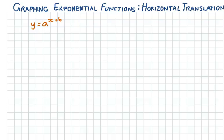In this video we'll be looking at graphing exponential functions and how we horizontally translate them. To horizontally translate a function, we use a constant in the exponent term. So here we have y equals a to the power of x plus b.